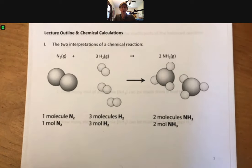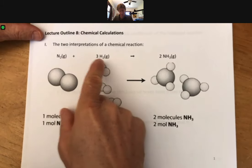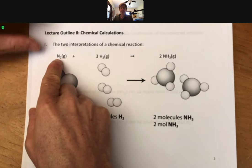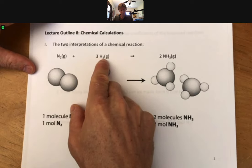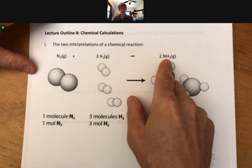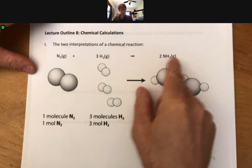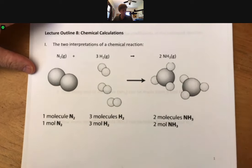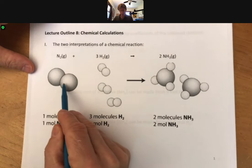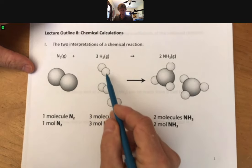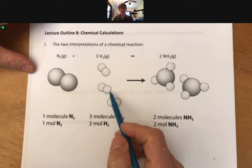Now, we'll start with a little bit of review. We talked about the two interpretations of a chemical reaction before, and I've got my chemical reaction here. Nitrogen gas plus three hydrogen gas goes to two ammonia gas. And I've got pictures of these molecules or representations of them. So we've got nitrogen here, hydrogen, three molecules here, and two molecules of ammonia.